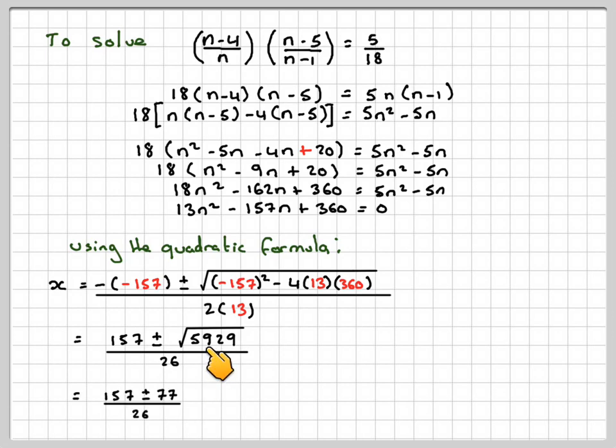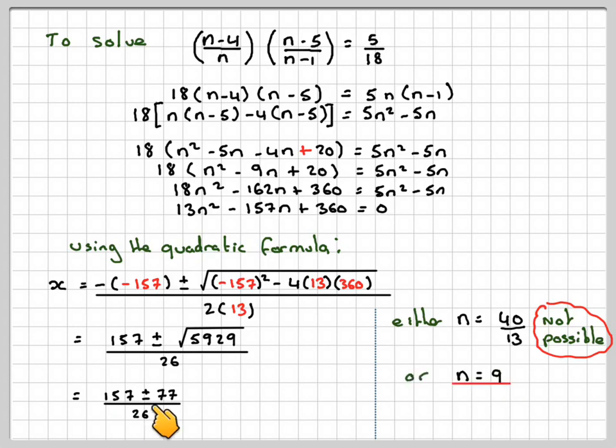So we get 157. The square root of that is 77 over 26. So we're going to get either 157 minus 77 over 26, which gives 40 over 13. Well, this is not possible in this situation because n has to be an integer. It represents the number of sweets in the bag. So we just reject that. Or that n is equal to 9 when you do 157 plus 77 over 26.